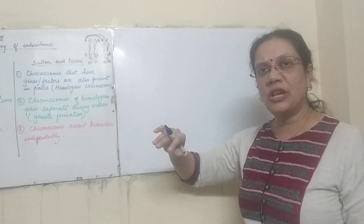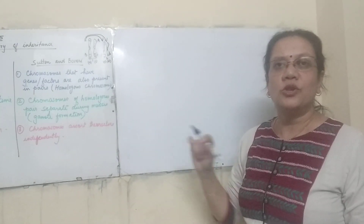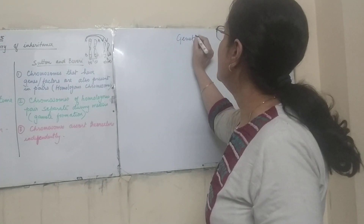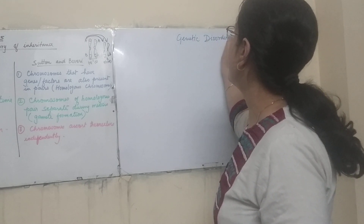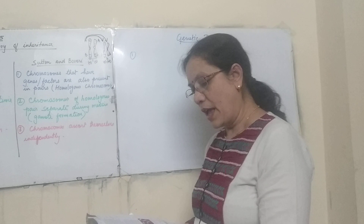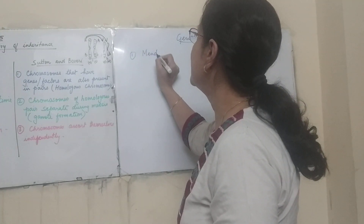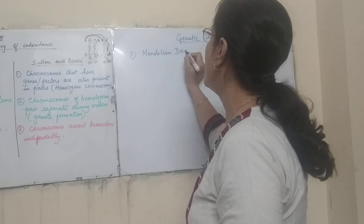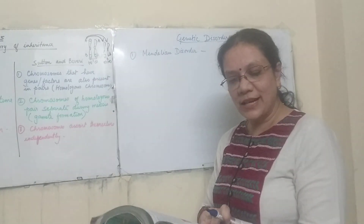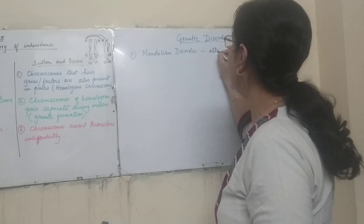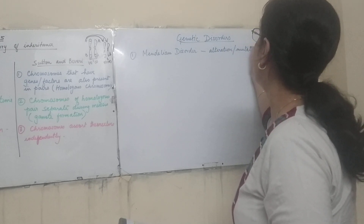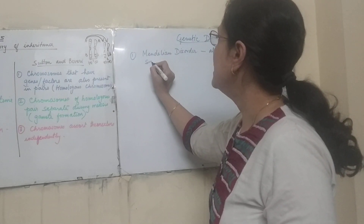The other type of mutation might happen in the DNA — it may be due to a single point mutation. What I am talking about is genetic disorders. The first one is the Mendelian disorder. In a Mendelian disorder, there is an alteration or mutation of a single gene.